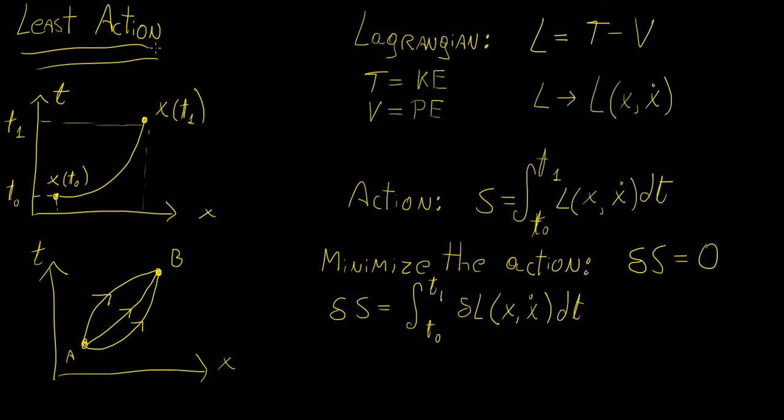So the central concept to Lagrangian mechanics is the formulation of the principle of least action, and what it says is that given two endpoints along the trajectory of any body or particle in space, you're gonna have a multitude of different possible paths that the particle or body can follow.